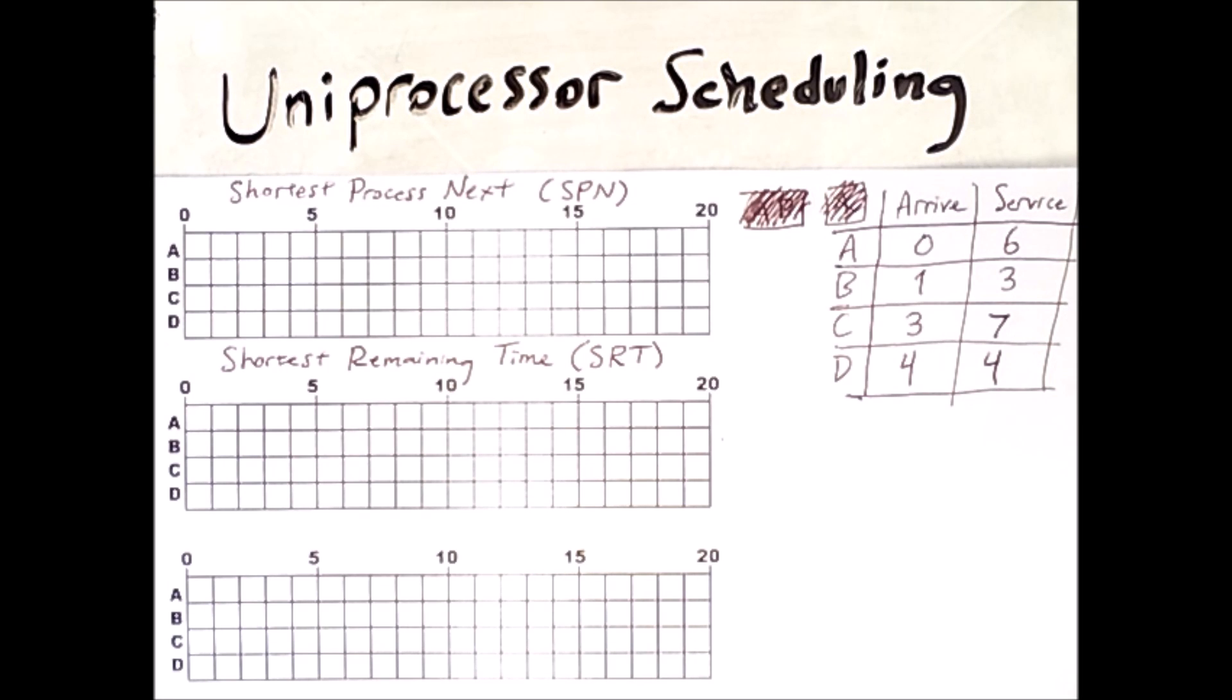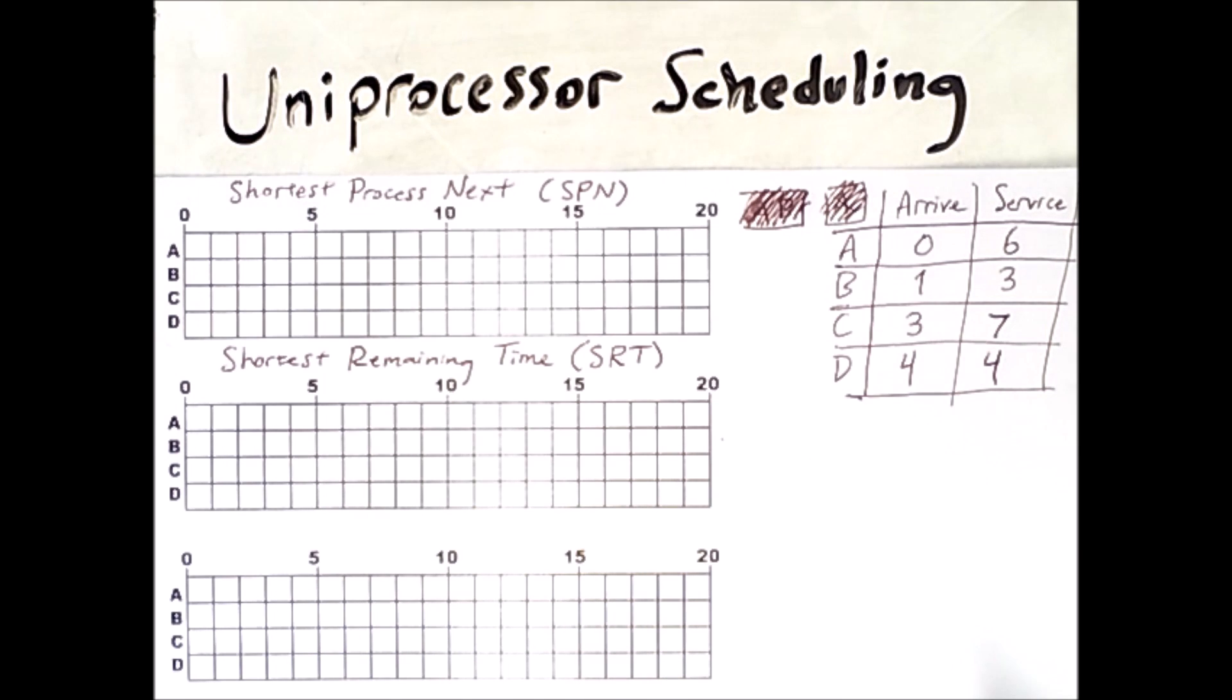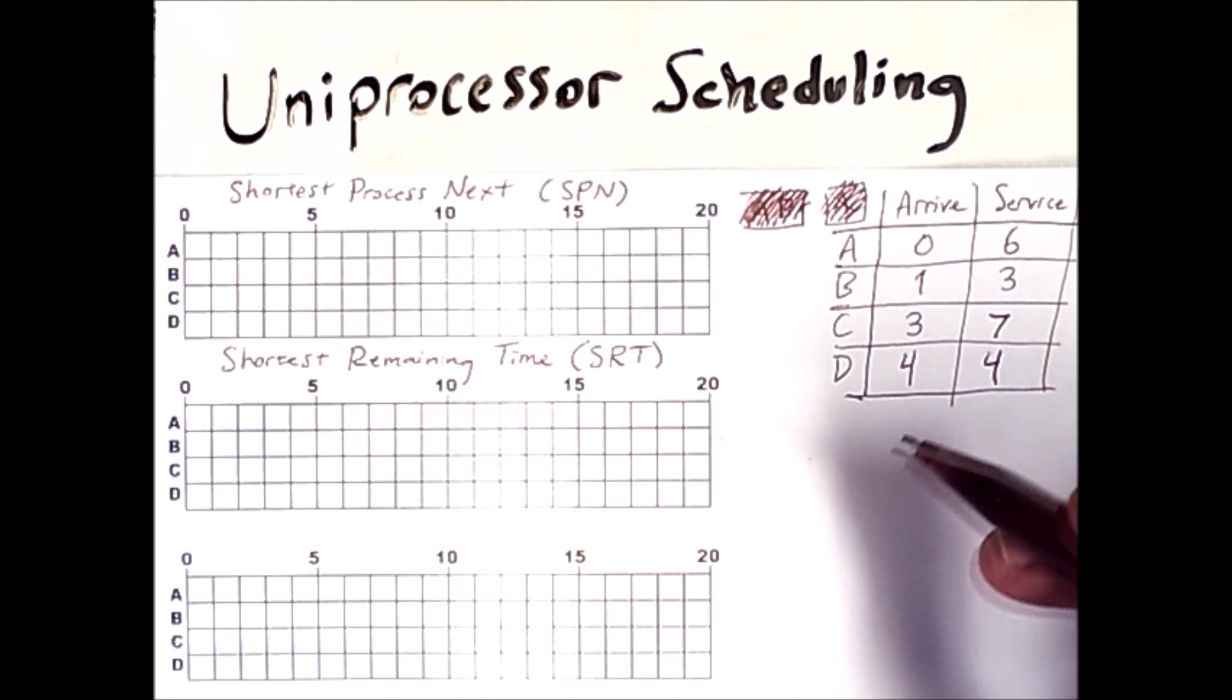The next two scheduling algorithms I'll discuss are Shortest Process Next and Shortest Remaining Time. These two scheduling algorithms favor short processes.